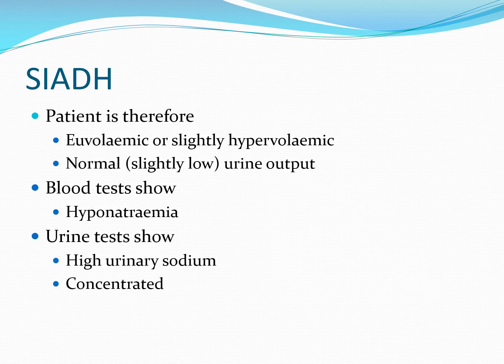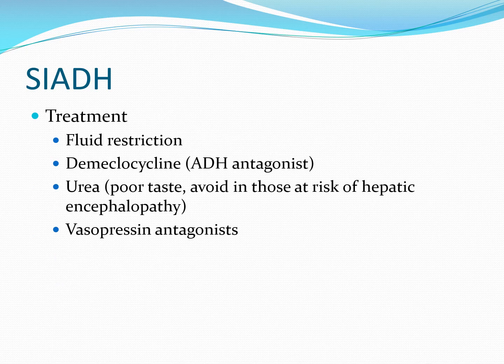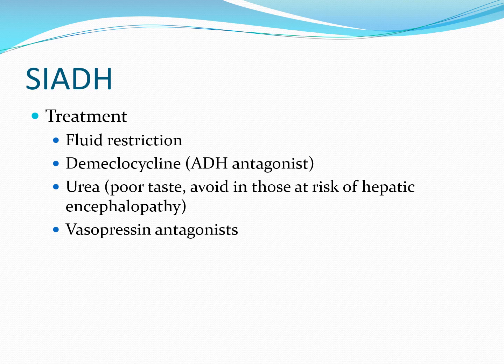There are also certain transient causes such as endurance exercise and general anaesthesia. Our patients tend to be euvolemic or perhaps very slightly hypervolemic. They will usually have a normal or slightly low urine output, but blood tests will often show profound hyponatremia, and urine tests will show high levels of urinary sodium. The urine tends to be quite concentrated. Treatment is initially by fluid restriction. If this alone isn't enough, drugs such as demeclocycline and ADH antagonists can be given. Urea has been described as potentially beneficial but tastes unpleasant and can precipitate hepatic encephalopathy. Vasopressin antagonists can also be given.